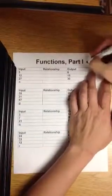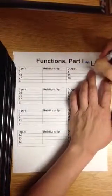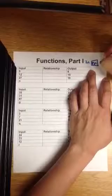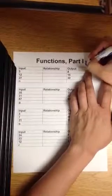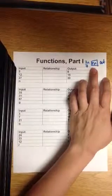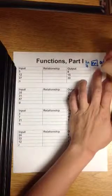You might have remembered this as input, function machine, output. So I put in a 7. You do something to that 7 and it may come out as an 11.